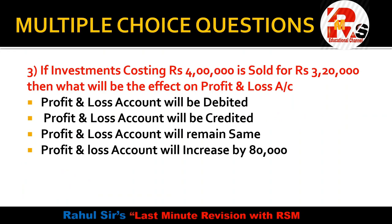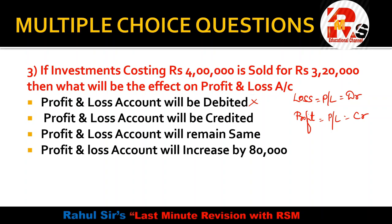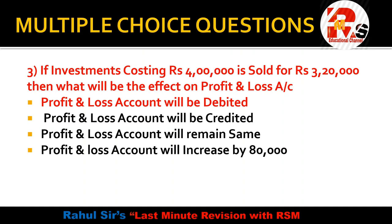Next question: if an investment costing ₹4,00,000 is sold for ₹3,20,000, what will be the effect on the Profit and Loss account? Clearly there is a loss of ₹80,000. The rule is: when there is a loss, the Profit and Loss account is debited; when there is a profit, the P&L account is credited. Here there is a loss, so the right answer is that the Profit and Loss account will be debited.